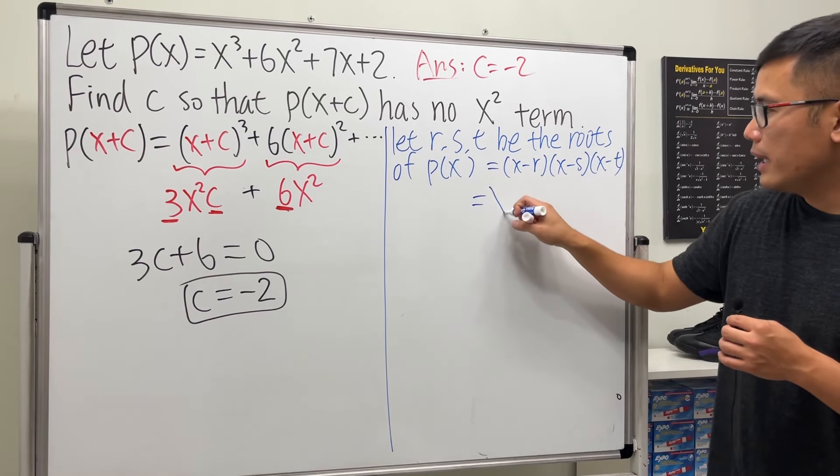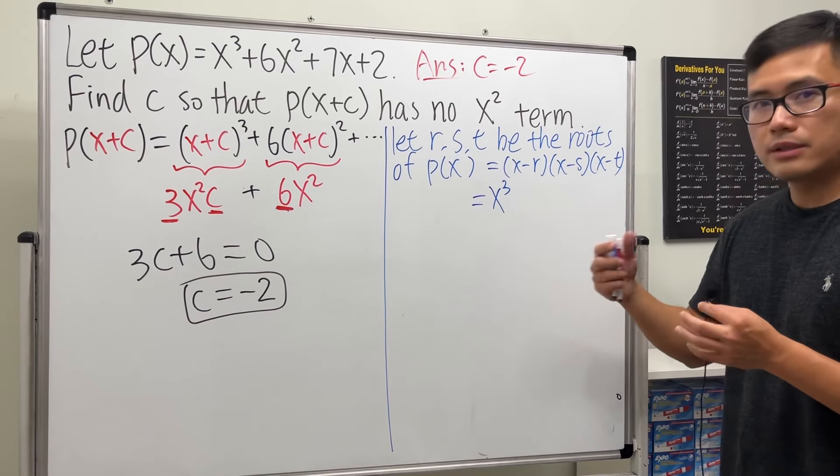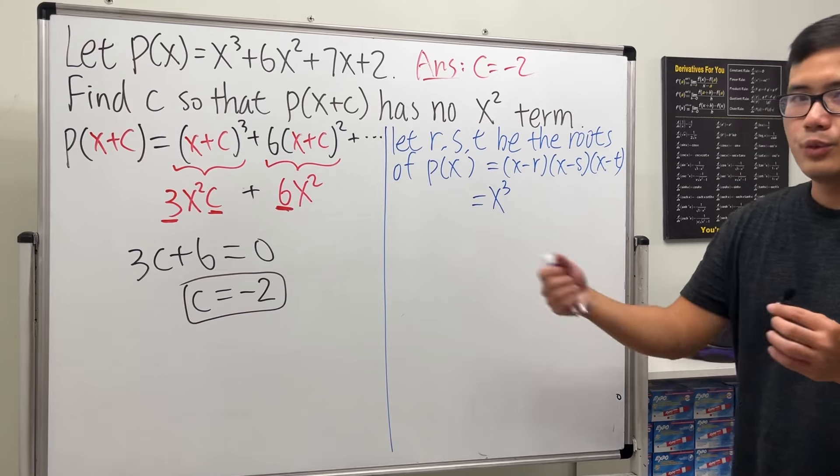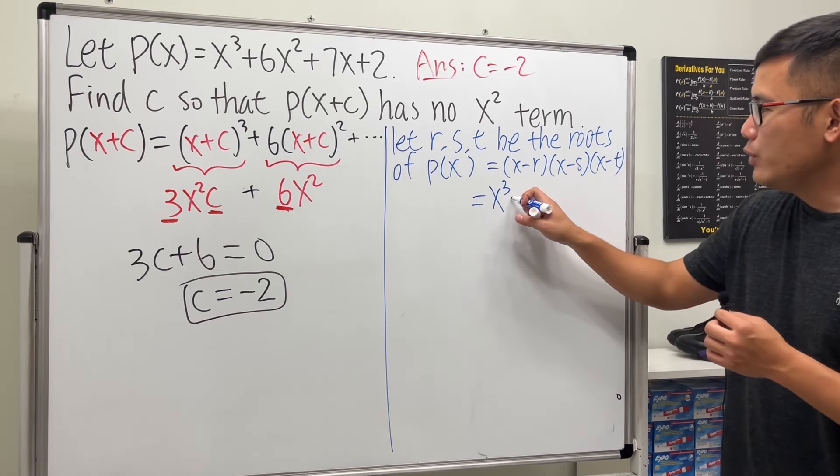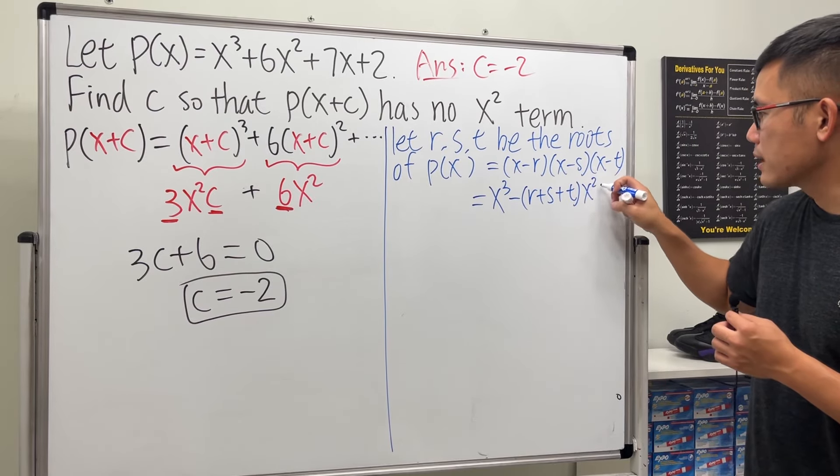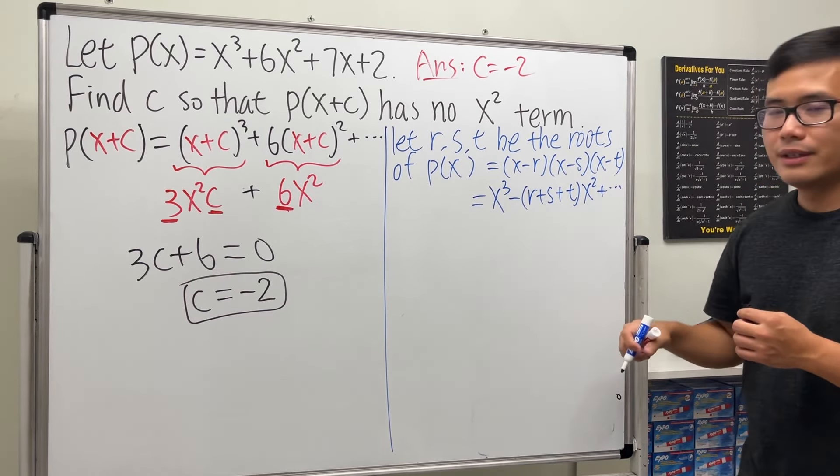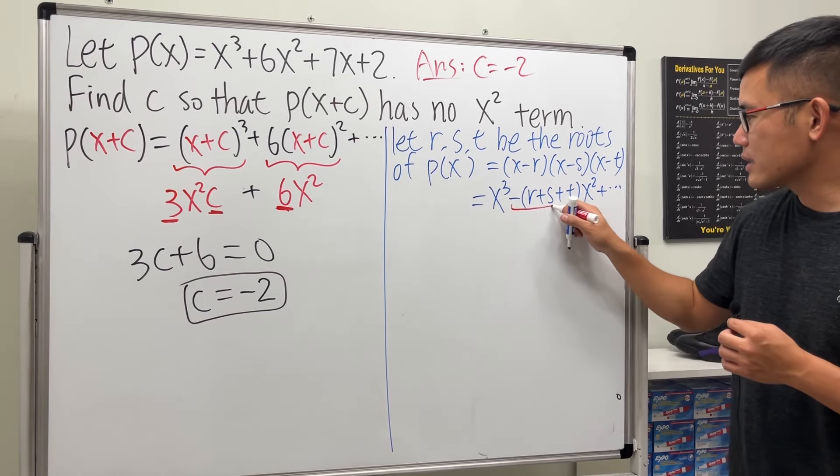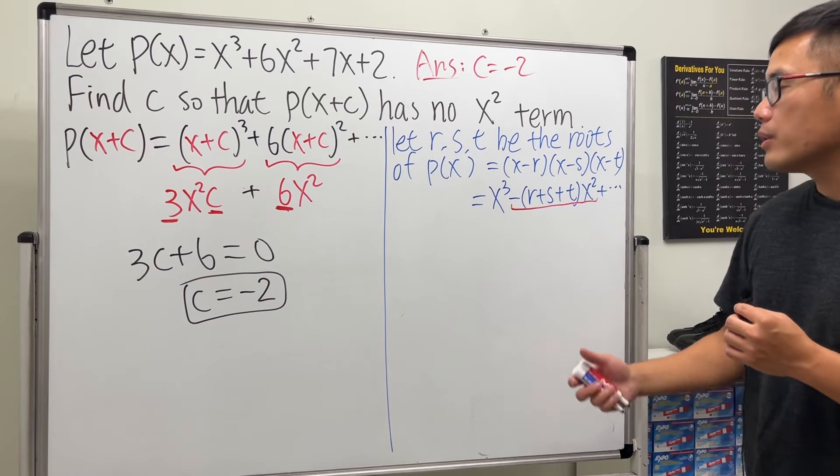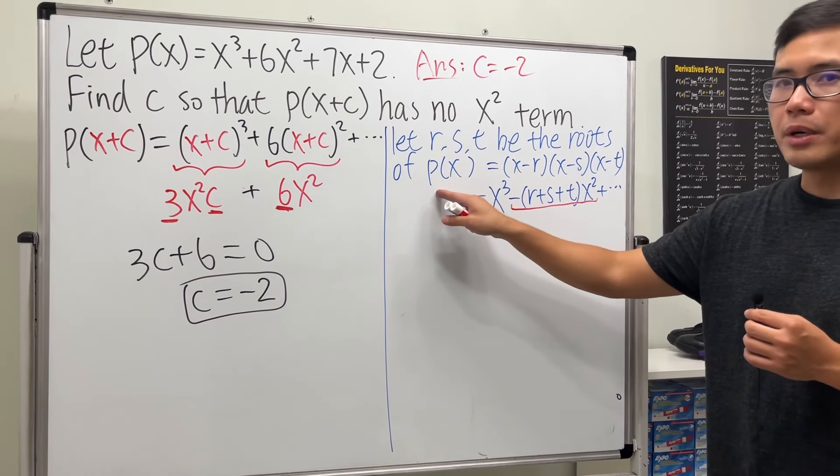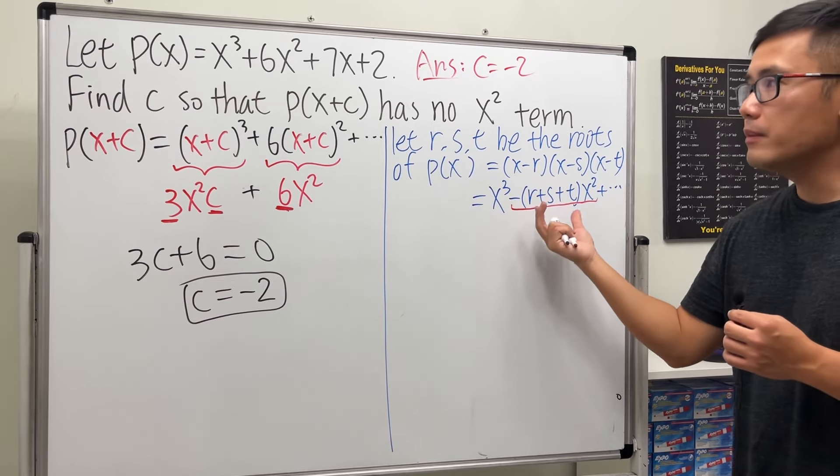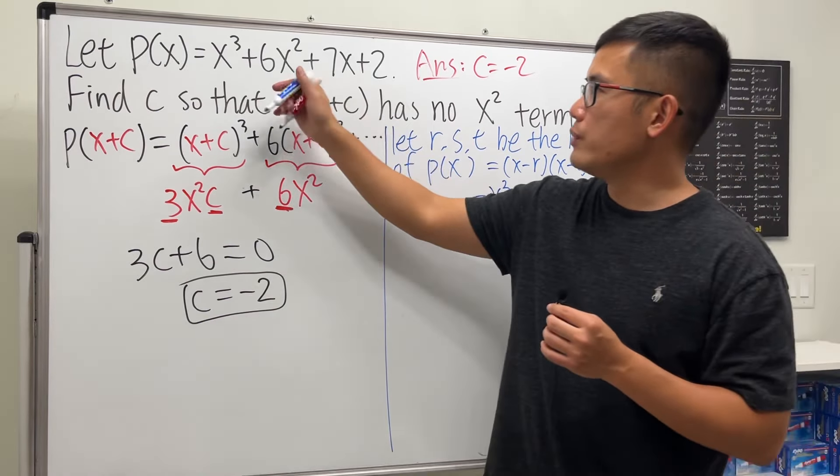You can go ahead and multiply this out. The first term is x³, and the next term is the x² term: -(r+s+t)x². If r, s, t are the roots of the original polynomial, then we can figure out their sum by looking at the coefficient of the x² term.